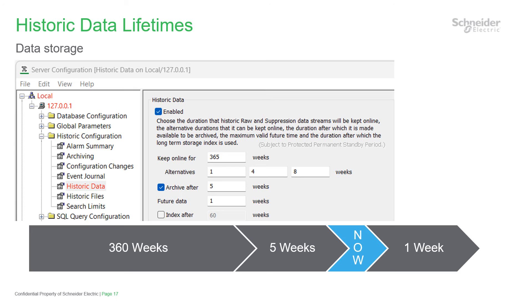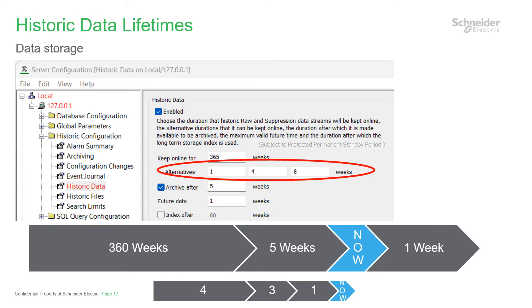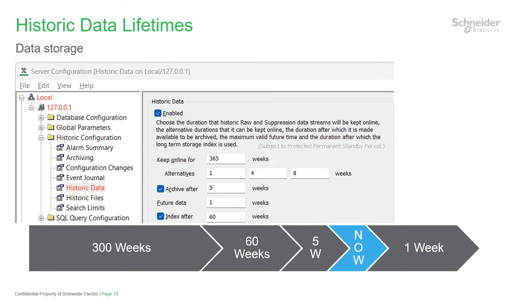For historic data from points and accumulators, all points have got the same online and archive period — here they're set for 360 weeks plus 5, total 365 weeks. For GeoSCADA 2023 there are new alternative maximum lifetimes available for point configuration. These shorten the life for selected points, perhaps to be used with points with a higher data frequency. For this point historic data there's another setting called Index After. By using this you can reduce the system startup time and reduce memory use. This feature is mainly effective for large systems and you may wish to contact the support team for advice before it's deployed. You could try without it first.